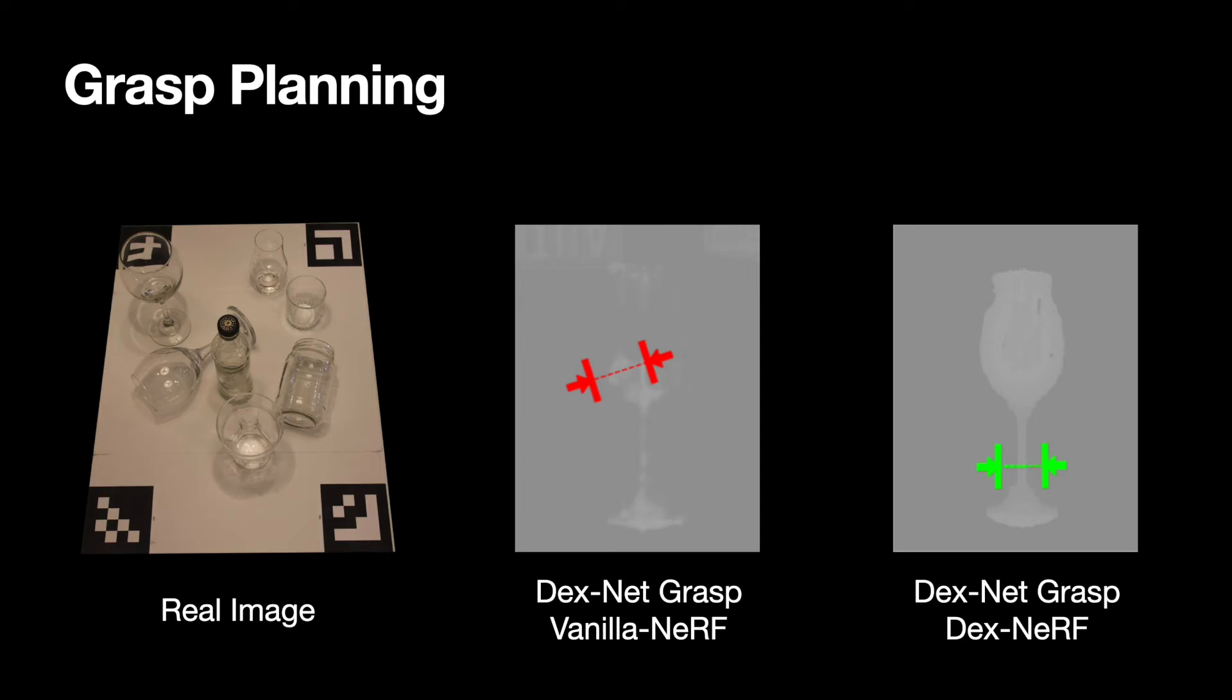As opposed to vanilla NeRF depth maps, DEXNERF renders depth maps that can be used for grasp planning.